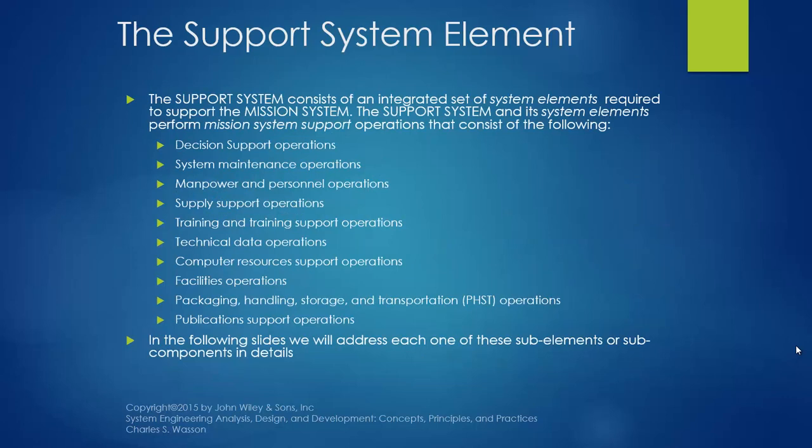The support system elements consist of an integrated set of system elements required to support the mission system. The support system performs mission system support operations that consist of: decision support operations, system maintenance operations, manpower and personnel operations, supply support operations, training and training support operations, technical data operations, computer resources support operations, facilities operations, packaging, handling, storage and transportation operations, and publication support operations. In the following slides, we will address each one of these sub-elements in detail.